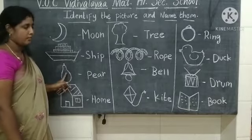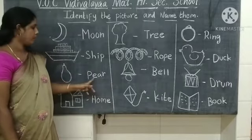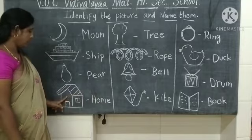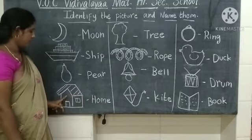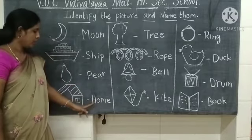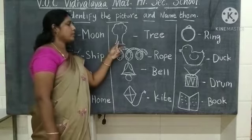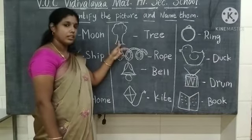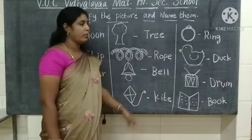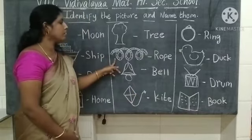What picture is this? This is a pear. P-E-A-R — pear. What picture is this? This is a home. H-O-M-E — home. What picture is this? This is a tree.